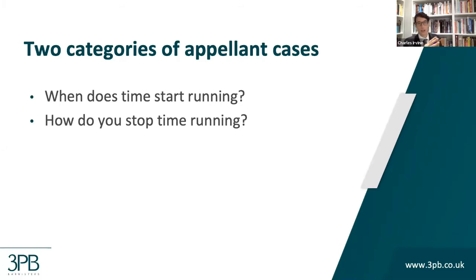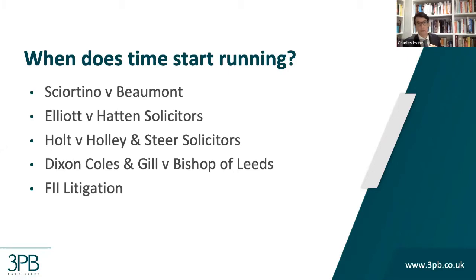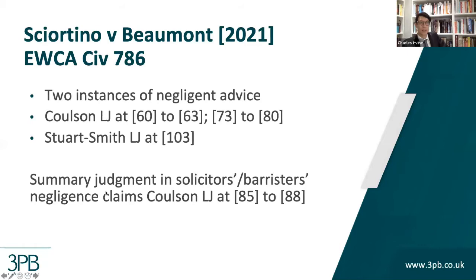I've decided to split the six cases into two categories: firstly, when does time start running, and secondly, how do you stop time running. In the first category we have five cases. Taking Sicatino and Beaumont, Elliott and Hatton solicitors, and Holt and Holley and Steer solicitors first — those three all relate to section 2 of the Limitation Act. Dixon, Coles and Gill relates to section 21, and finally the FII litigation relates to section 32. Without further ado, Sicatino and Beaumont.